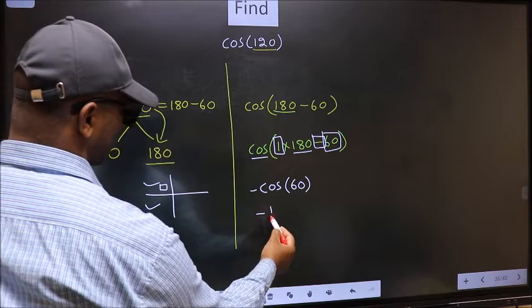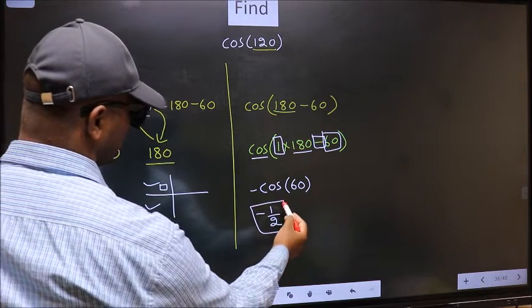So, negative cos 60 is 1 by 2. This is our answer.